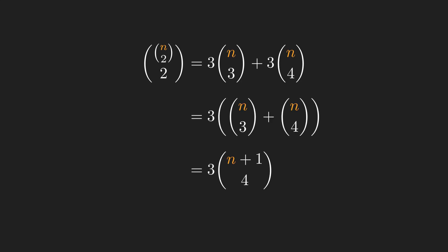By putting everything together, we will have n choose 2 choose 2 is equal to the sum of the last two expressions. We can factor out 3 and then use Pascal's identity to complete the proof. Just imagine how nasty it would have been if we wanted to prove this algebraically.